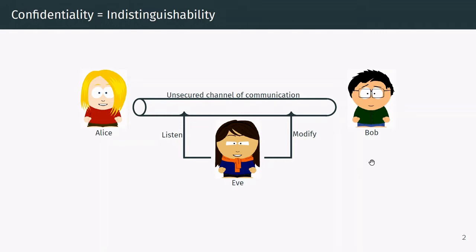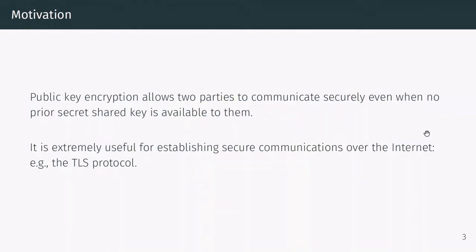One of the most important goals of cryptography is to achieve confidentiality of communication. For example, we would like to allow two parties, Alice and Bob, to communicate over an insecure channel in a way that prevents a malicious entity like Eve from gaining any meaningful information. Moreover, we would like to do so even when no prior secret information is shared between the two parties. This is one of the greatest achievements of public key cryptography, and is used in our daily life — for example, when we browse to a website, the TLS protocol is used to share a secret key between us and the web server. The main construction that allows such functionality is the public key encryption primitive.